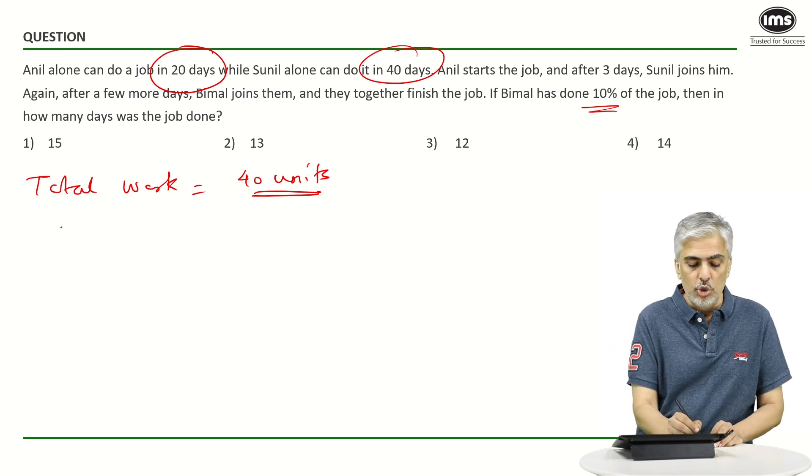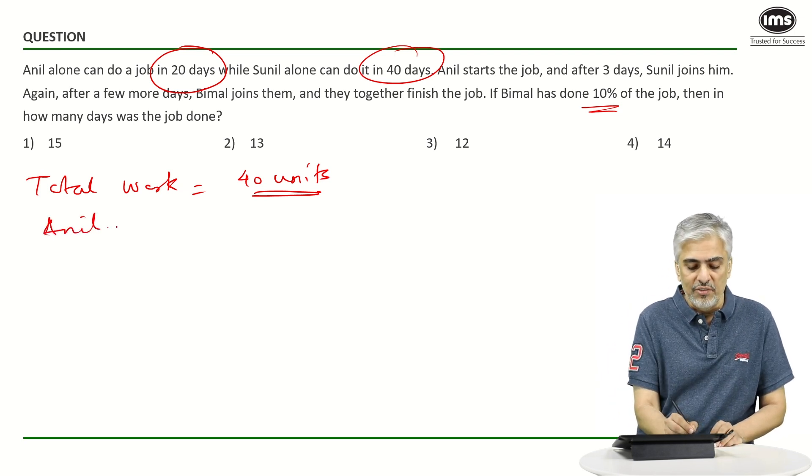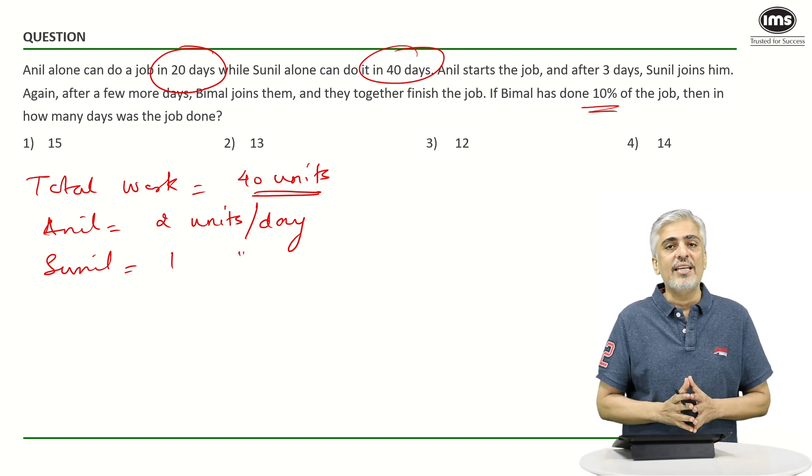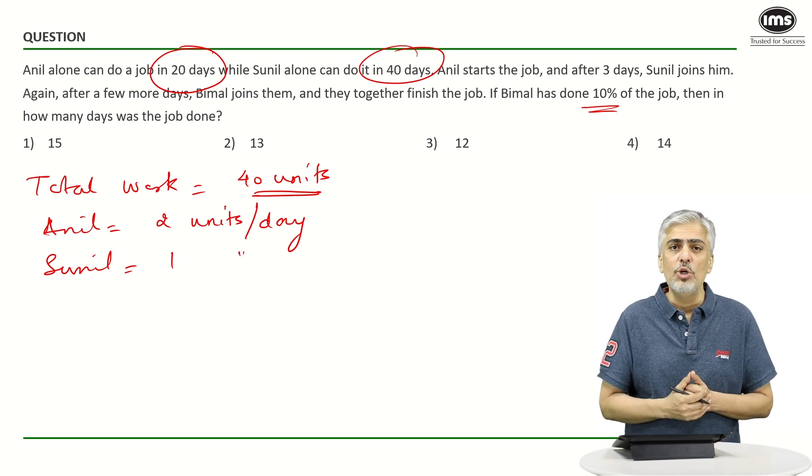Anil can do the job in 20 days. So therefore Anil is doing 2 units per day while Sunil is doing exactly 1 unit per day right? So we've got till there. But we don't know Bimal's efficiency. But do we need it also?